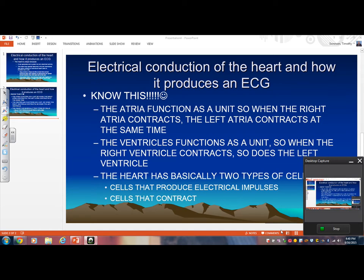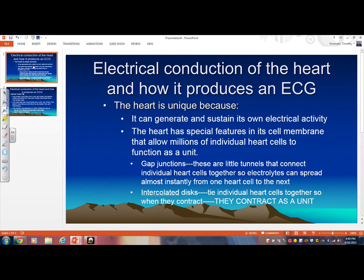Before we begin our discussion I've got to review a couple of things that you learned in A&P, right? Number one, the heart's unique and the heart is unique because it can generate and sustain its own electrical activity. If somebody has a spinal cord injury, they will not be able to move their skeletal muscle because skeletal muscle cannot generate its own electrical activity. It relies on nerves from the brain and spinal cord to stimulate the muscle to contract, but your heart still contracts.